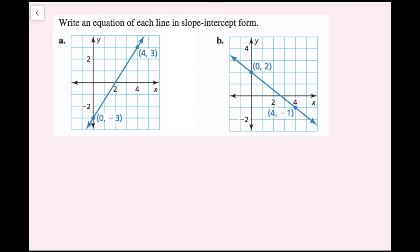Write an equation of each line in slope-intercept form. In slope-intercept form, y equals mx plus b, so all I need to find is the slope and the y-intercept. I can find the slope by doing rise over run on my graph. I just need to figure out how many vertical units I need to go and then how many horizontal units I need to go.